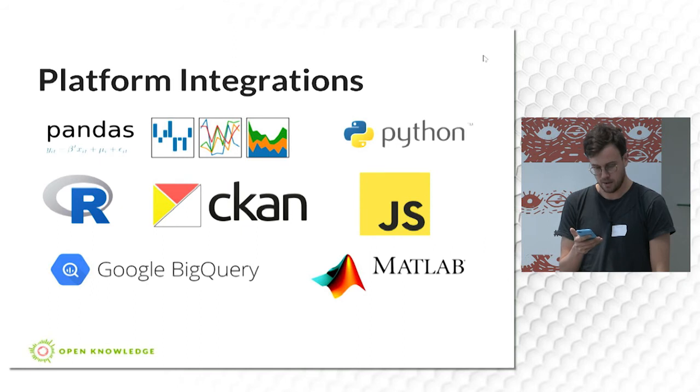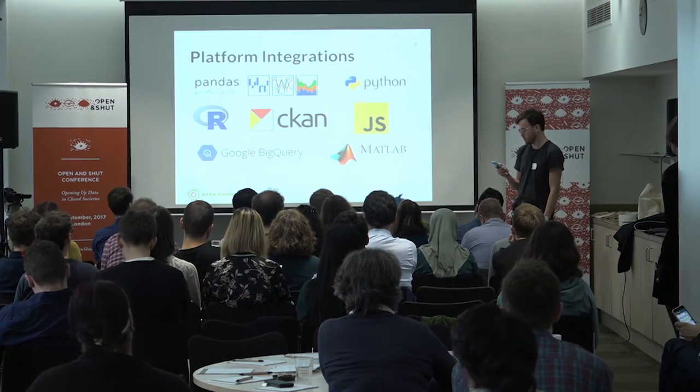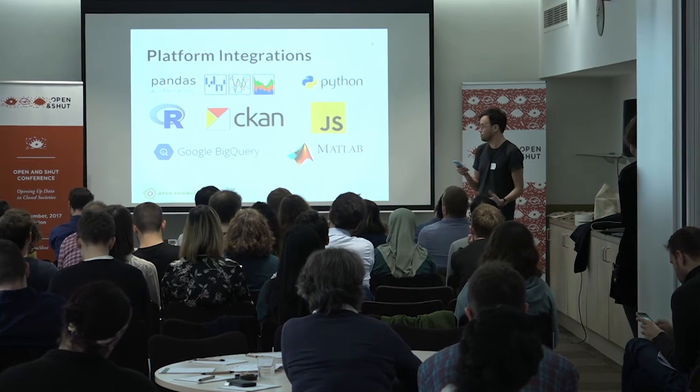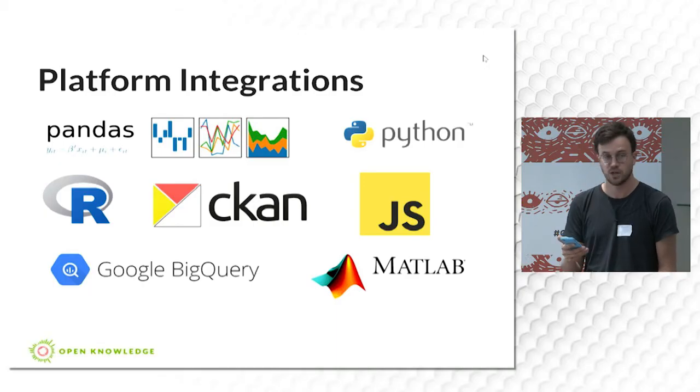Frictionless Data is about removing friction in working with data. We're developing a set of tools, specifications, and best practices for processing, describing, and publishing data. At the heart of this is the data package, a containerization format that's starting to emerge as best practice for publishing data. We're building libraries in Python, Ruby, Clojure, PHP, R, Java, and Julia.